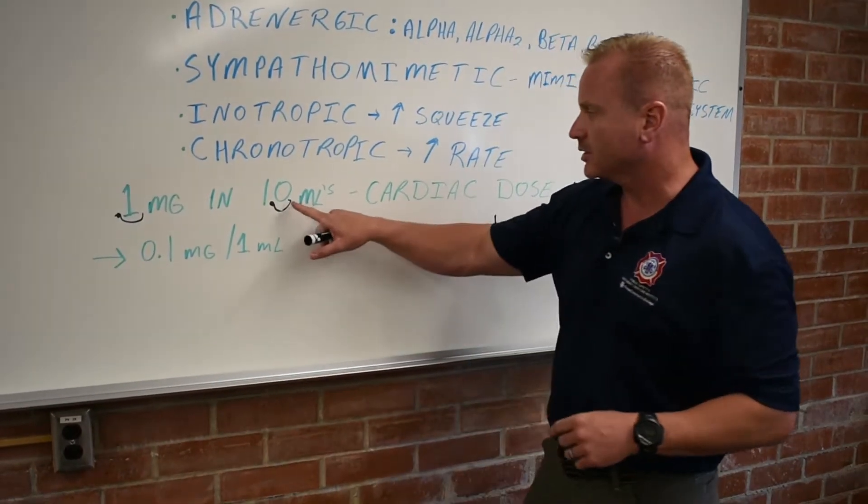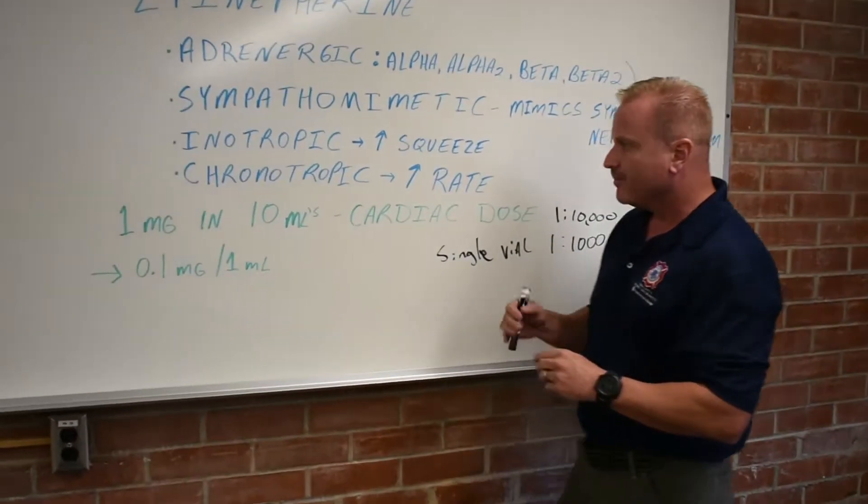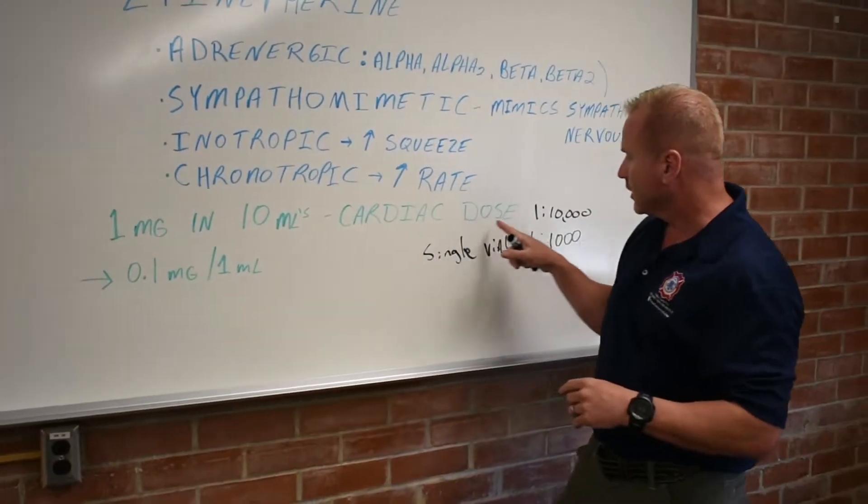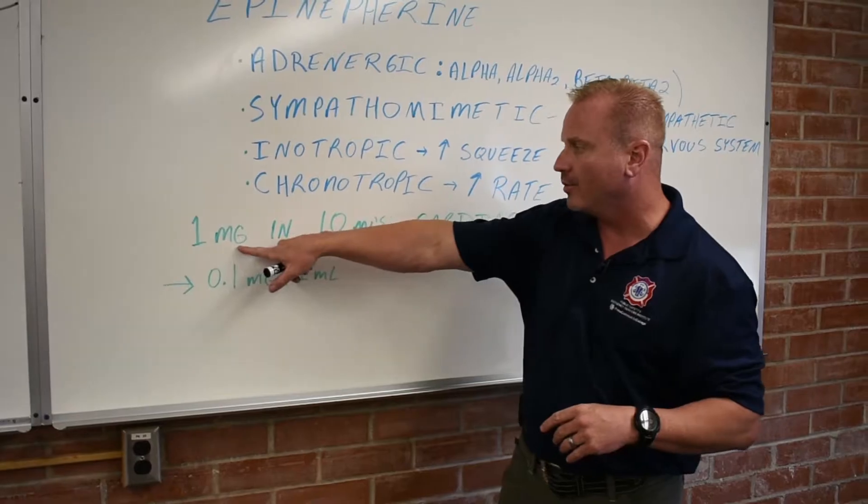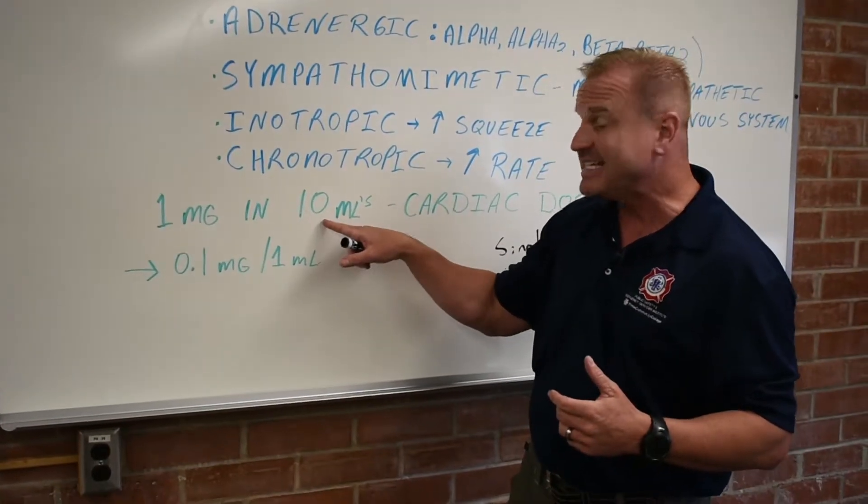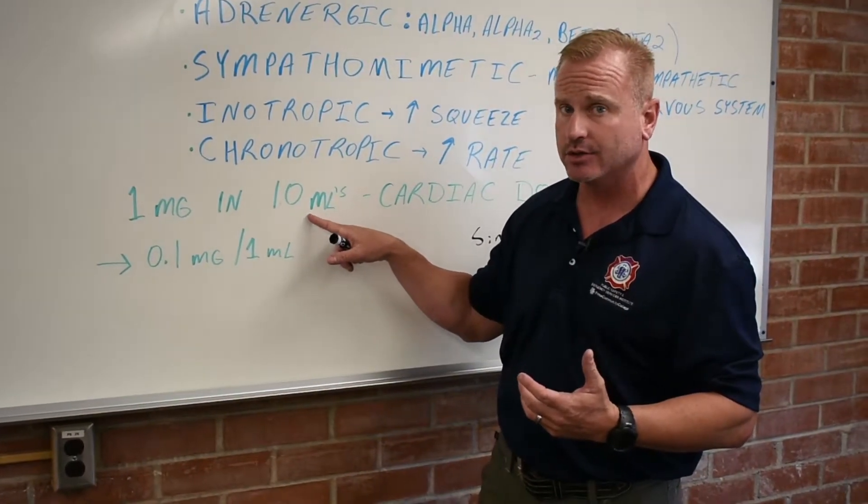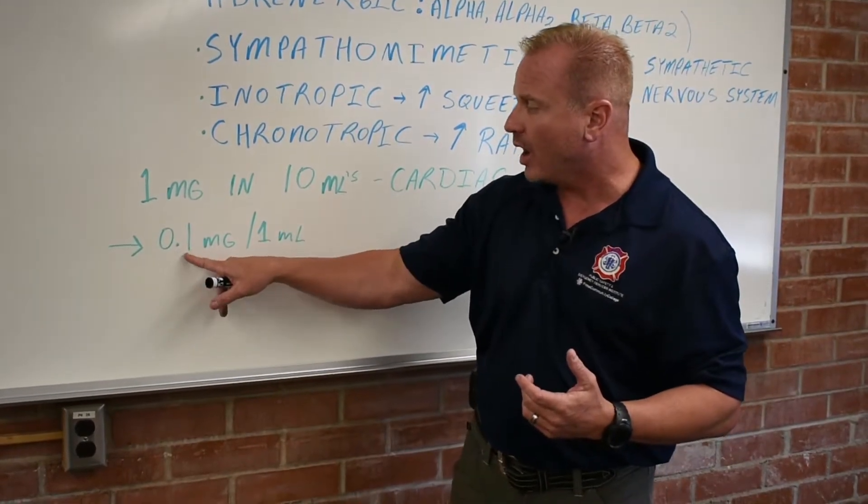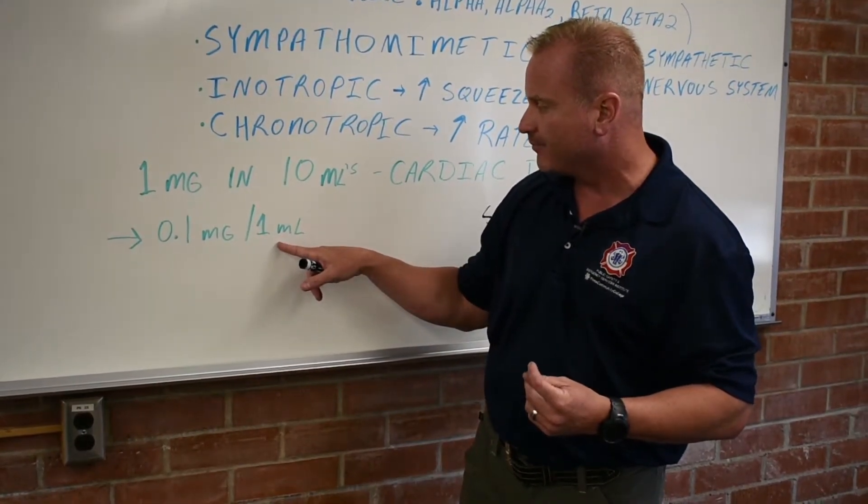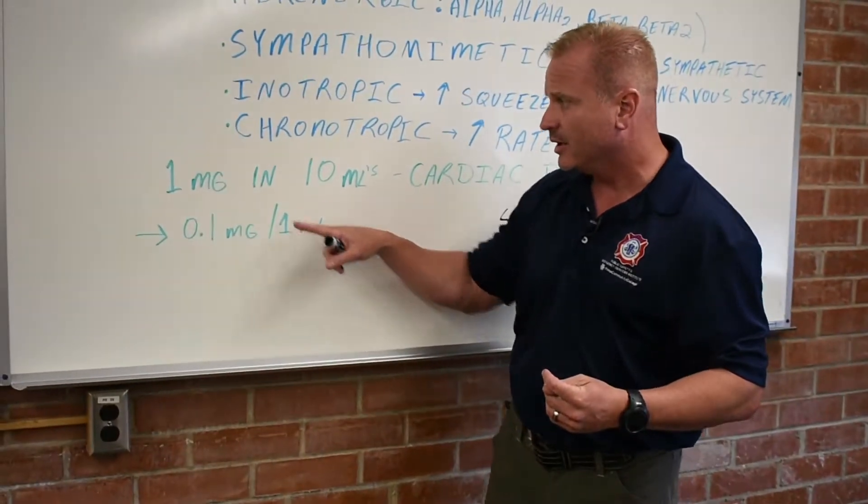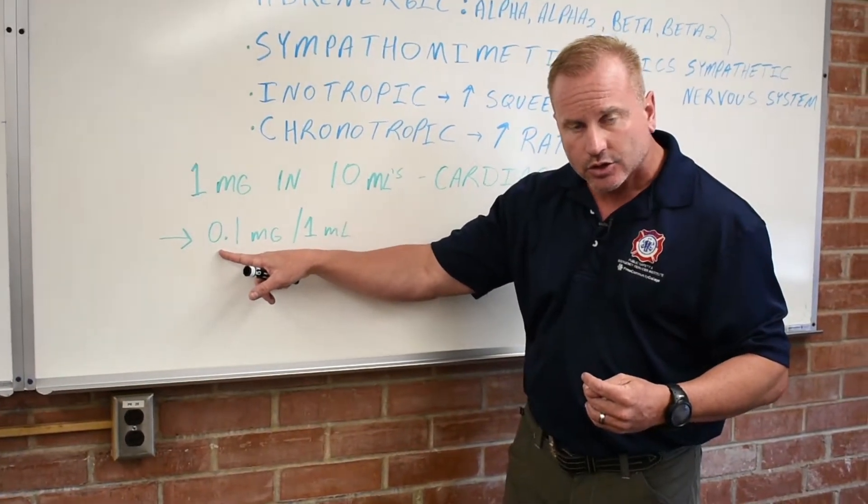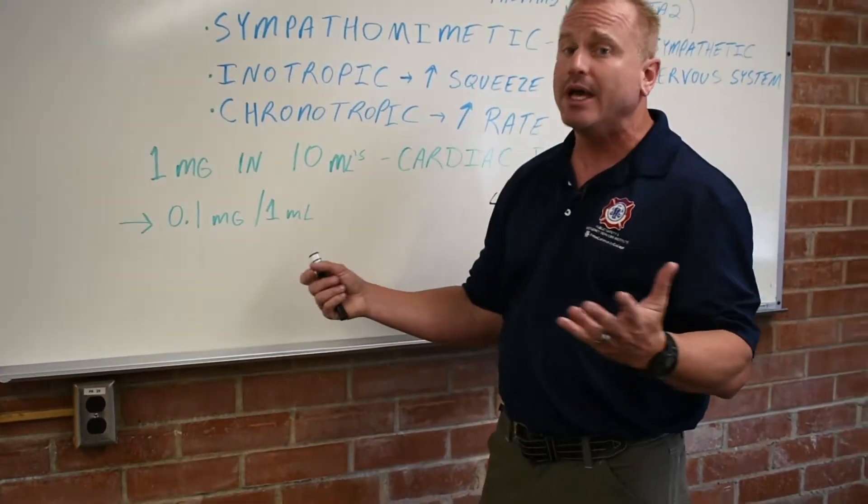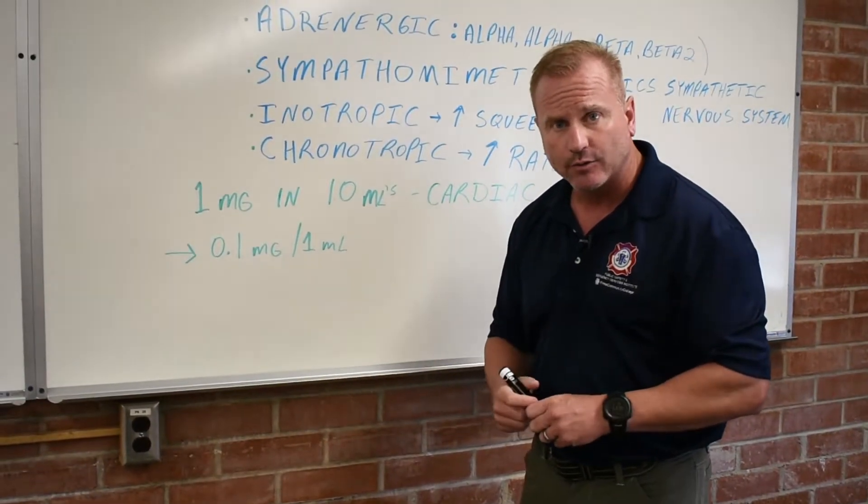And so we'll have a little demonstration here very soon. So a cardiac dose of epi is 1 to 10,000. That's one whole milligram of epinephrine in 10 cc's or 10 ml. When you break this down to 0.1 milligram per 1 ml, it's 10 times less. So it's 10 times less the strength. So it's super simple.